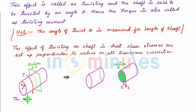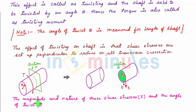The magnitude and nature of this shear stress, that is tau, and the angle of twist, that is theta, due to the twisting moment is given by a theory called torsional theory. So let us now discuss what is torsional theory.